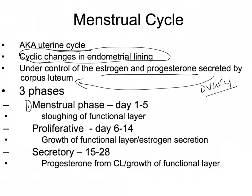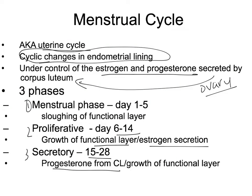There are three main phases. One is the menstrual phase, and it starts when menstruation starts — when the period starts, when the bleeding starts — days one to five. The proliferative phase is day six to 14, where the functional layer gets thicker and estrogen is being secreted. The third stage is the secretory phase, which is day 15 to 28, where progesterone from the corpus luteum is being released and the functional layer is growing again.